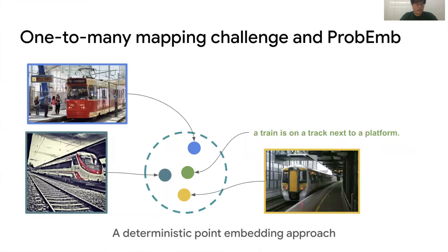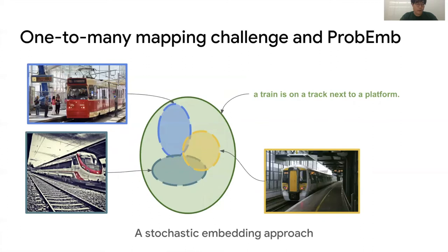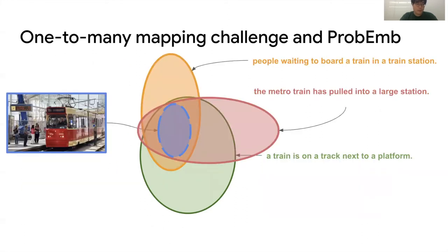Let's go back to the Cross-Modal Retriever again. When we use a point embedding, we still suffer from the one-to-many correspondence. However, the Provest Embedding approach gives us more plausible representation. The common concept has a large ambiguity or large Gaussian variance, which can cover different possible concepts. An image with multiple concepts will be placed on the intersection of different concepts.